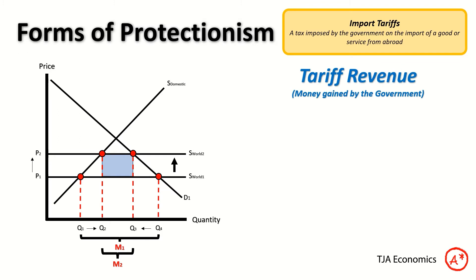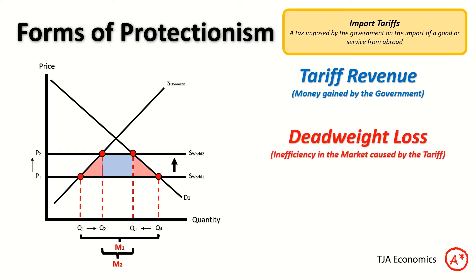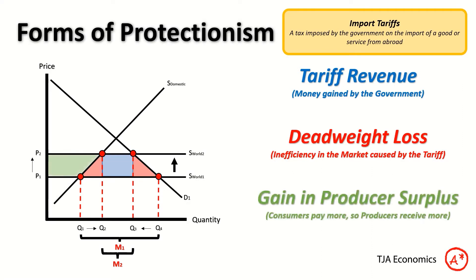The key areas on the diagram: the blue box is tariff revenue — money the government gains by levying the tariff. The red triangles are deadweight loss, the inefficiency in the market caused by this intervention. And in green, we've got the increase in producer surplus. Because consumers are now paying more, producers receive more. Those three boxes — blue, red, and green — are all losses in consumer surplus. So the consumer loses out, but the government and domestic producers gain.